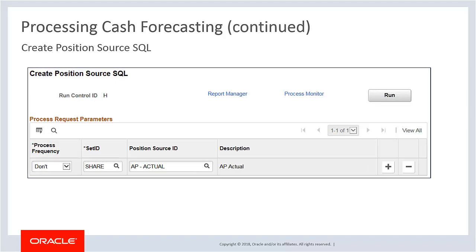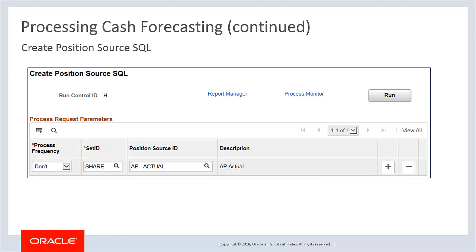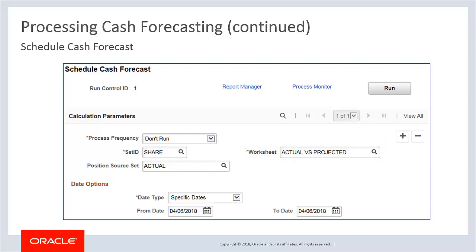The Create Position Source SQL page is used to enter parameters and execute a process that creates the SQL defined for a position source. The position source SQL for cash forecasting is stored on the source. If you want to regenerate SQL for several sources, you can do so using this run control page. Use the Schedule Cash Forecast page to run the Cash Forecast Calculations application engine process. This process calls the calculation engine, which uses the request parameters to process each request. You can schedule the forecast process for each worksheet and source set. The Cash Forecast calculation process overrides all results in the Summary and Detail tables created for a specific calculation date and value date if the results are not locked. Ensure that position source data is ready before running the cash forecast calculation process.